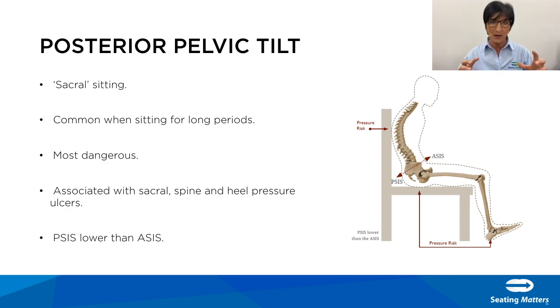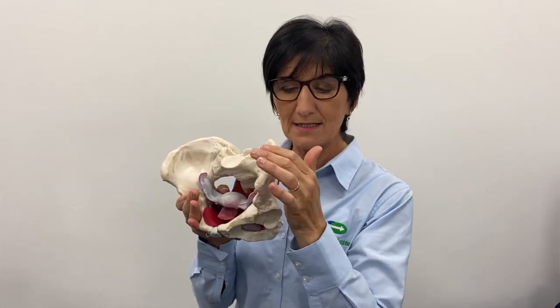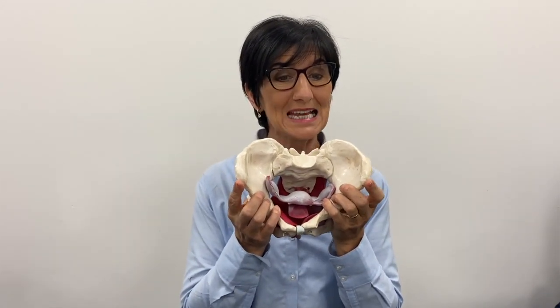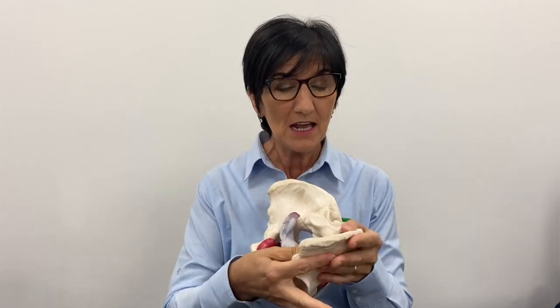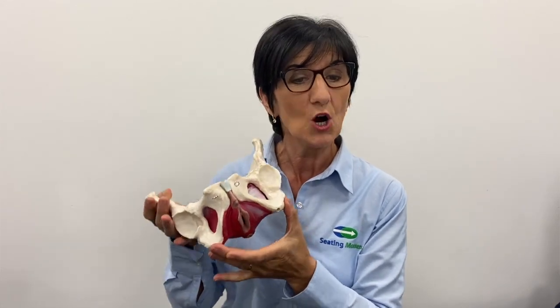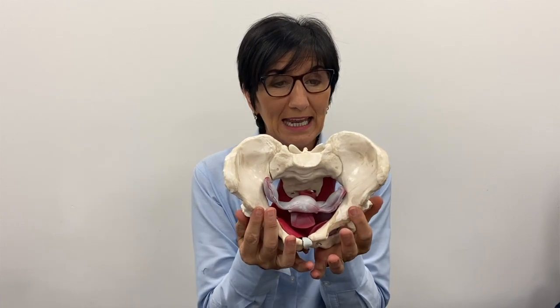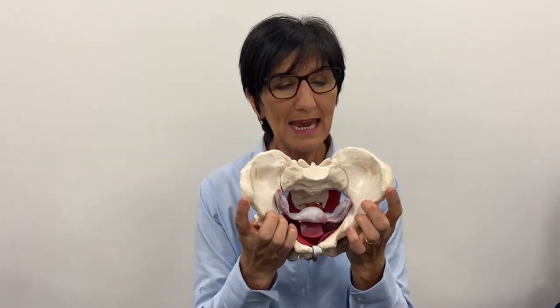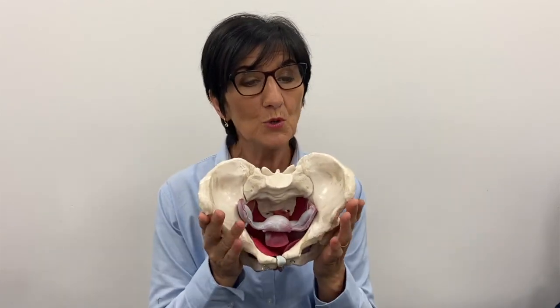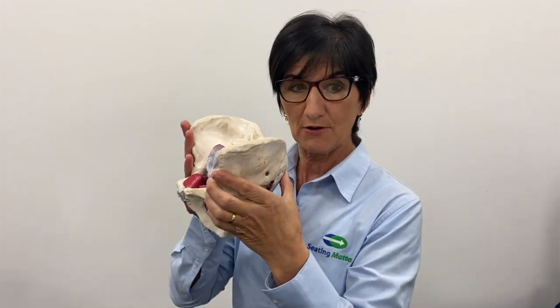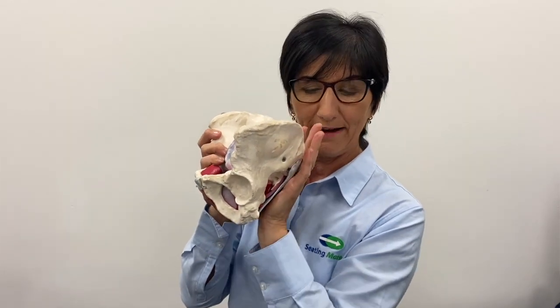I'm going to demonstrate using a pelvis model. The iliac crest runs along the top; at the front are two notches called the ASIS, and at the back are two notches called the PSIS. We sit on the ischial tuberosities — the ITs. In normal posture, weight is taken evenly through both ITs and the ASIS and PSIS are level. In posterior pelvic tilt, the person sits sacrally with the ASIS higher than the PSIS, so weight goes through the sacral area, making it prone to skin breakdown.